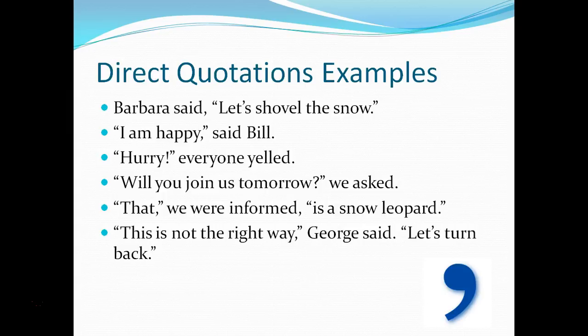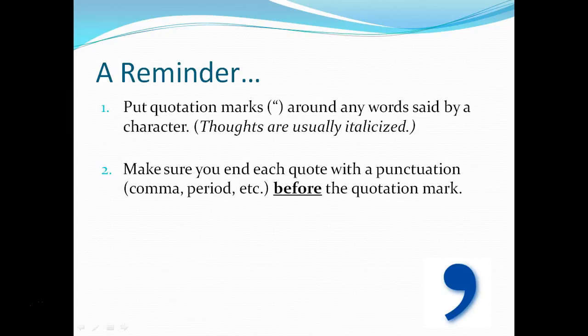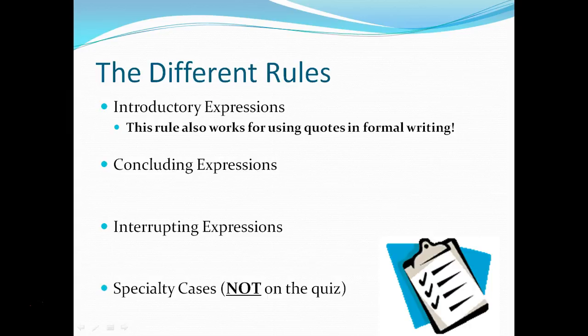Just a reminder: when we're writing direct quotes, we put quotation marks around any word said by a character or person, and thoughts are usually italicized. Second, make sure you end each quote with a punctuation — comma, period, etc. — that goes before the last quotation mark. There are three types of expressions: introductory expressions, concluding expressions, and interrupting expressions. This rule for introductory expressions also works for using quotes in formal writing, such as in a paper or essay.